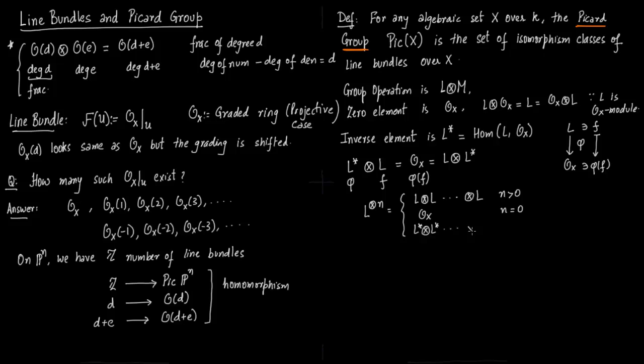Now I am just writing the notation that for N greater than 0 what you need to do, for N less than 0 what you need to do. So line bundle tensor N - what if N is positive, N is 0, and N is negative. That is the definition. Over projective space it will make much more sense.